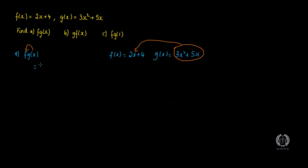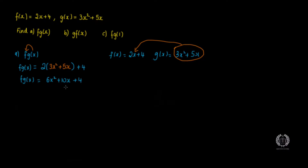So we have: instead of 2x + 4, you write 2(3x² + 5x) + 4. That's your f(g(x)) before simplifying. Now expand: 2 times 3x² is 6x², and 2 times 5x is 10x, then plus 4. There's nothing more to simplify — remember, do not solve this, just simplify. So you've found f(g(x)) = 6x² + 10x + 4.